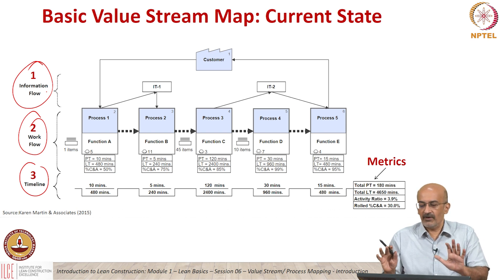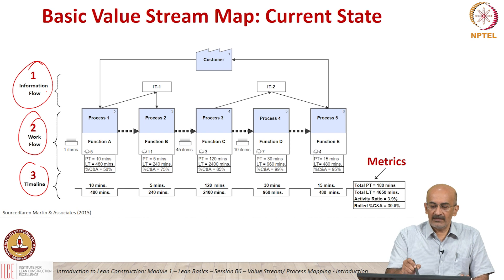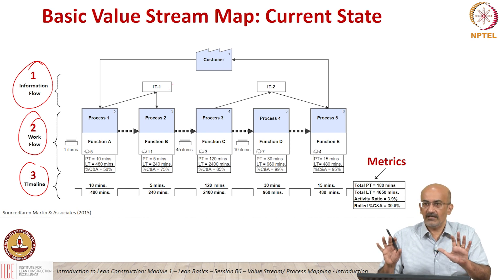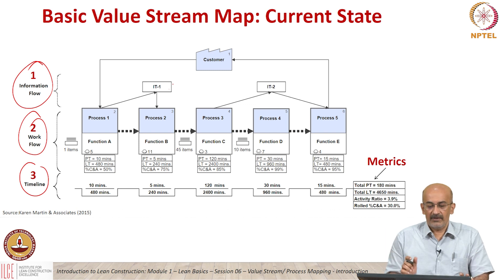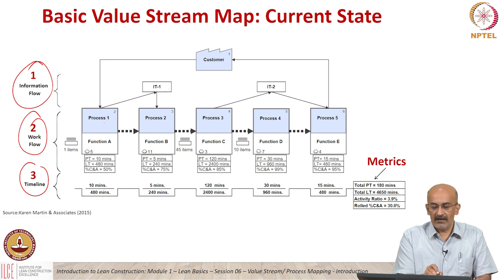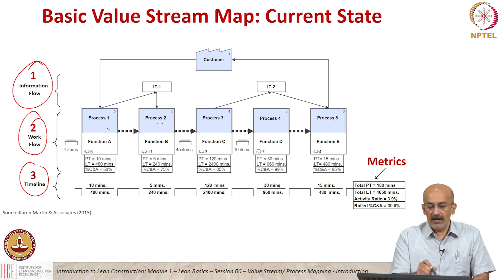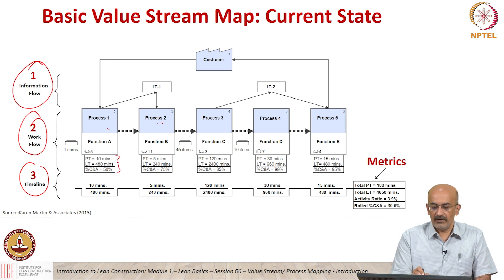Incidentally, this map is just put as a generic example. Now, if we take the processes or tasks that constitute the map, you can see they are represented here. This map is capturing five processes — 1, 2, 3, 4, 5.